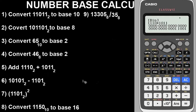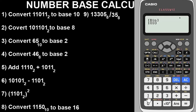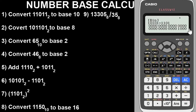Now let's check the subtraction: clear the screen and input 1 0 1 0 1, then press minus, then input 1 1 1 0 1. Press equals to get the result. The answer in base two is 10000 base two. Subtraction with binary numbers is very straightforward using this calculator.